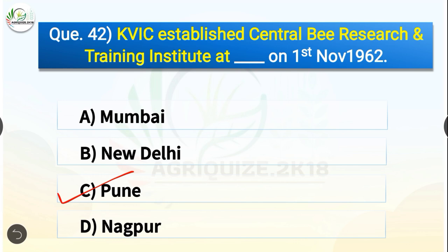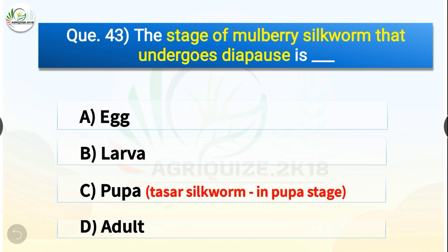Question number forty-three: The stage of mulberry silkworm that undergoes diapause is dash. The options are egg, larva, pupa, or adult. The correct answer is option A — egg. The stage of mulberry silkworm that undergoes diapause is egg, whereas the stage of tassar silkworm that undergoes diapause is the pupa stage.